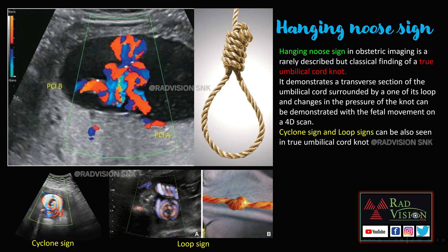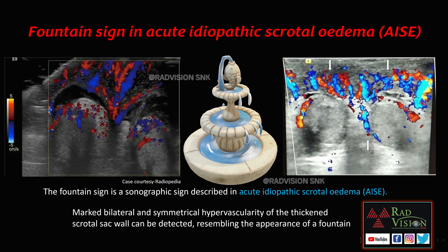Next, what is the fountain sign? The fountain sign is classically seen in acute idiopathic scrotal edema. Here you can see there is diffuse thickening of the scrotal wall, and on color Doppler you can see bilateral symmetrical hypervascularity of the thickened scrotal wall, which makes the fountain — that is, water flowing out of the fountain. This is bilateral symmetrical hyperemia noted in the thickened scrotal wall seen in acute idiopathic scrotal edema.